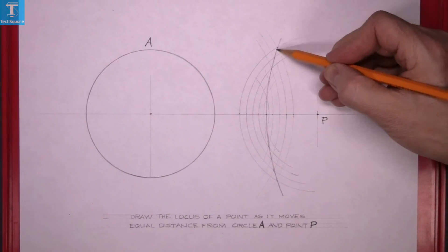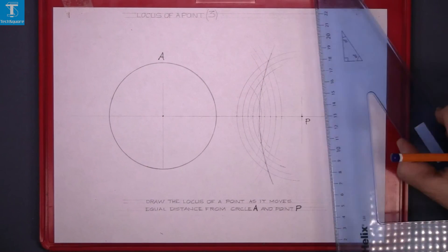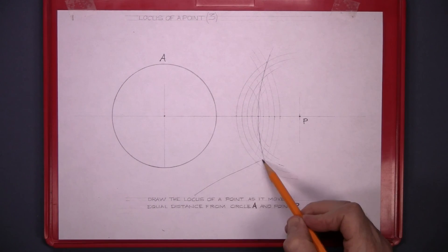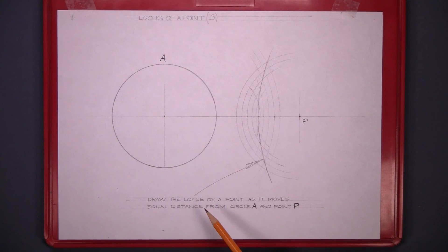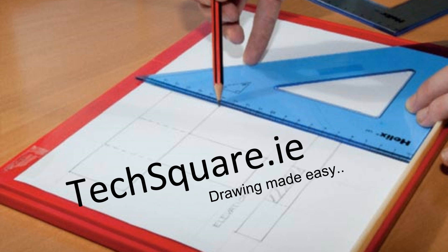That's the path traced by a point that moves equal distance from P and from the circle. So that's the locus of the point, equal distance from A and from point P, and that's your exercise complete.